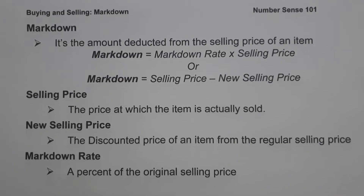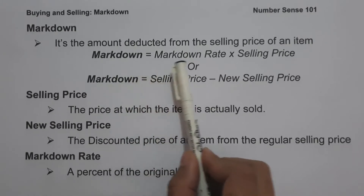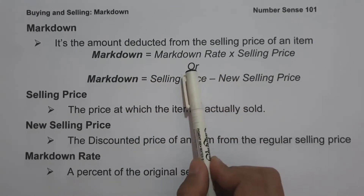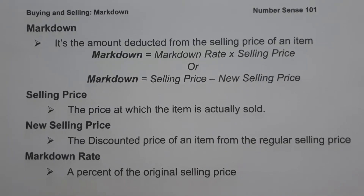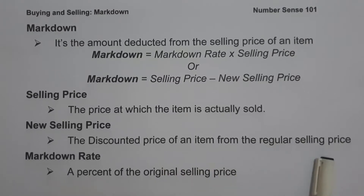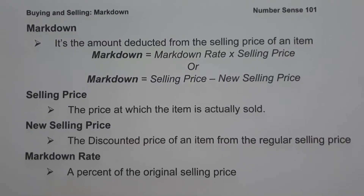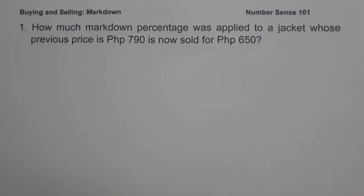The formula to find the markdown is: markdown equals markdown rate multiplied by selling price, or markdown equals selling price minus new selling price. The selling price is the price at which the item is actually sold. The new selling price is the discounted price from the regular selling price. The markdown rate is a percent of the original selling price. These are the basic concepts you need to remember.